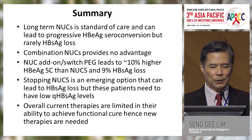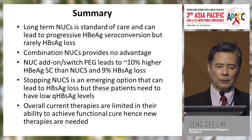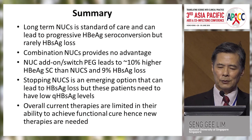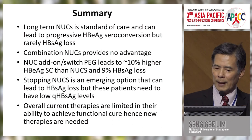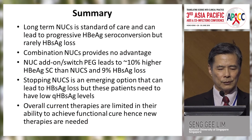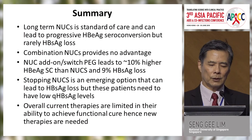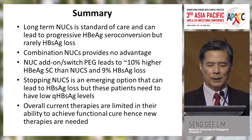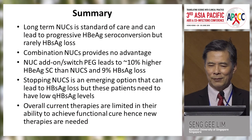To summarize current strategies: long-term nucleoside analogs as standard of care can lead to improved s-antigen loss but rarely s-antigen seroconversion. Combination nucleoside analogs provide no advantage. Nucleoside analog add-on or switch to PEG-interferon leads to approximately 10% e-antigen seroconversion but only 9% s-antigen loss. Stopping nucleoside analogs is an emerging strategy that can lead to s-antigen loss, but patients need to have low quantitative s-antigen levels. Overall, current therapies are limited in their ability to achieve functional cure — hence new therapies are needed.